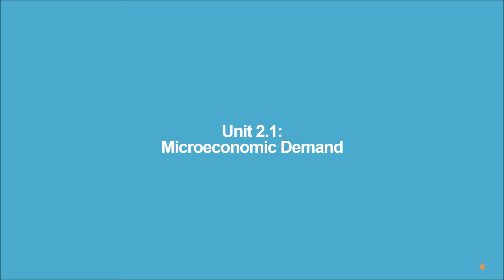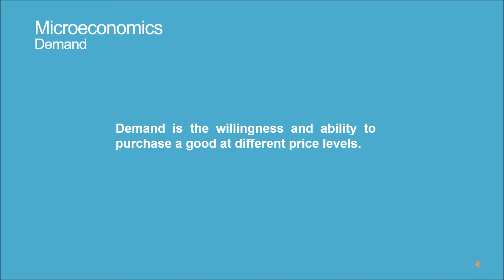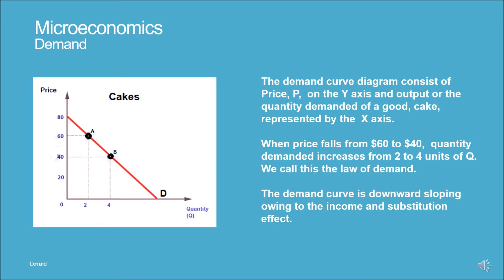Unit 2.1: Microeconomic Demand. Demand is the willingness and ability to purchase a good at different price levels. The demand curve diagram consists of price P on the y-axis and quantity demanded on the x-axis. When price falls from $60 to $40, quantity demanded increases from 2 to 4 units. We call this the law of demand. The demand curve is downward sloping owing to the income and substitution effect.